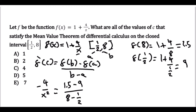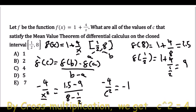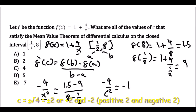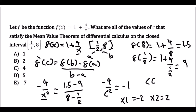Calculating the right side, we get negative 4 over c squared equals negative 1. Solving for c using a calculator gives x1 = negative 2 and x2 = 2. Since the interval is (1/2, 8), c must be greater than 1/2 and less than 8. Negative 2 is impossible, but 2 is between 1/2 and 8, so the answer is c = 2.